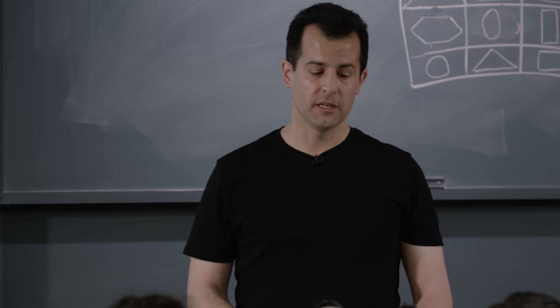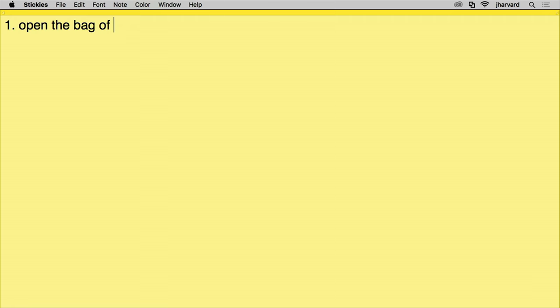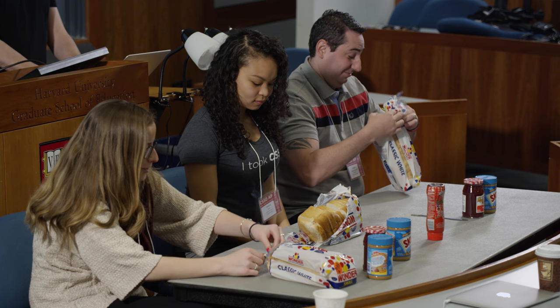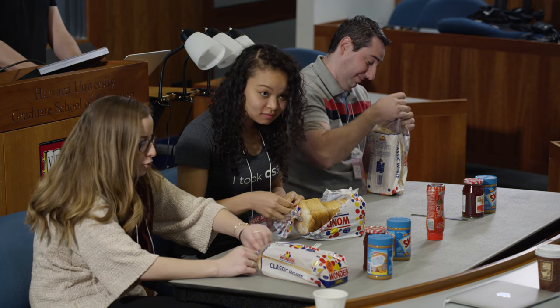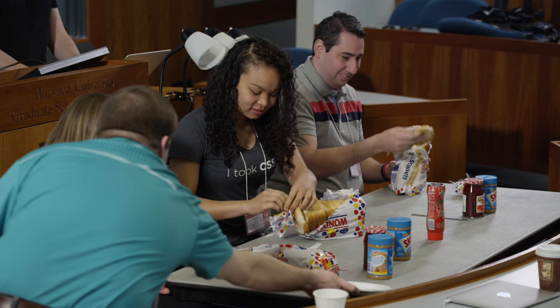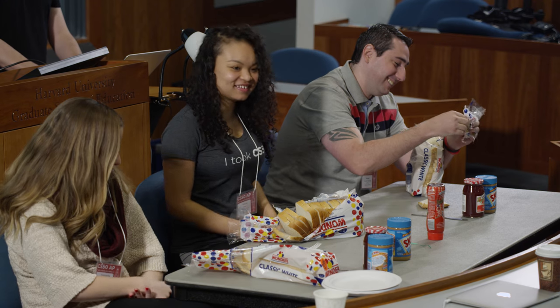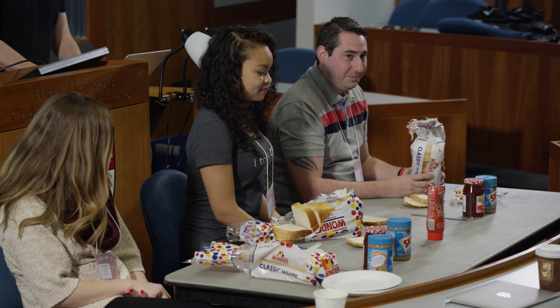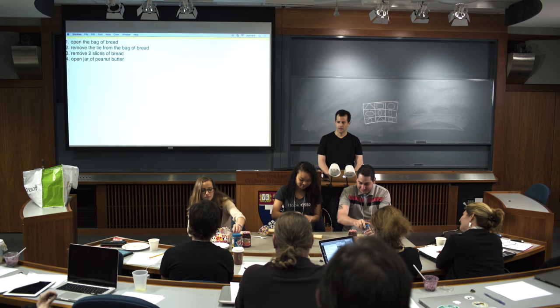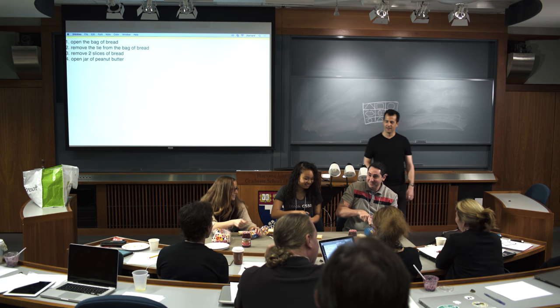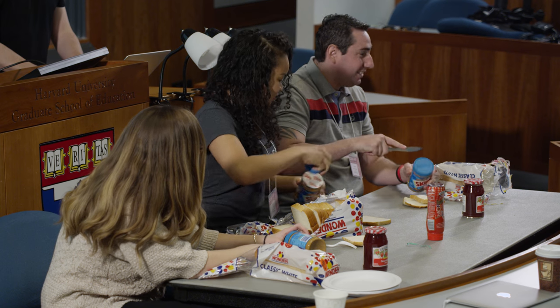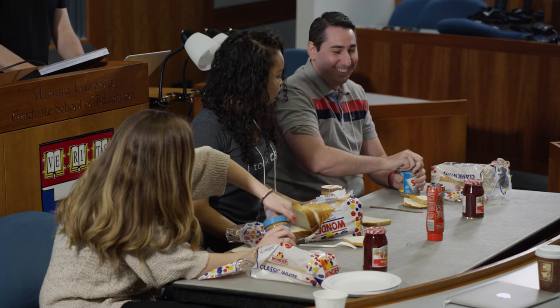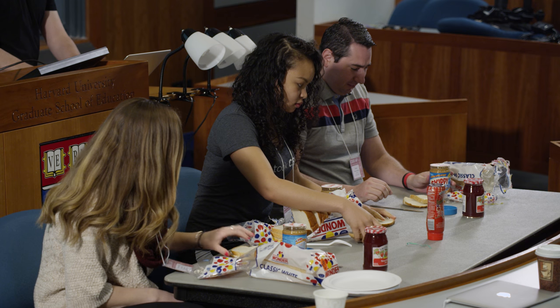So what would be the first step of making a peanut butter and jelly sandwich? Open the bag of bread. Then remove the tag — or the tie — from the bag of bread. Then: remove two slices of bread. Open jar of peanut butter. I heard: put the slices of bread flat on the table next to each other separately.